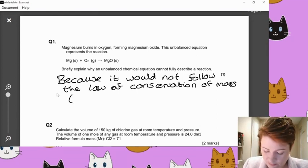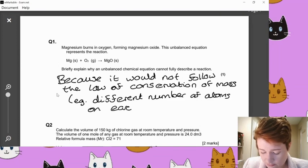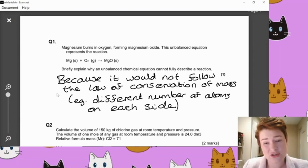Because it would not follow the law of conservation of mass, although there are other ways of saying that. So, for example, saying that there's a different number of atoms on each side of the equation or that it appears that it has gained mass or gained atoms, something along those lines. If you're not too sure why you got those marks, feel free to ask me now.